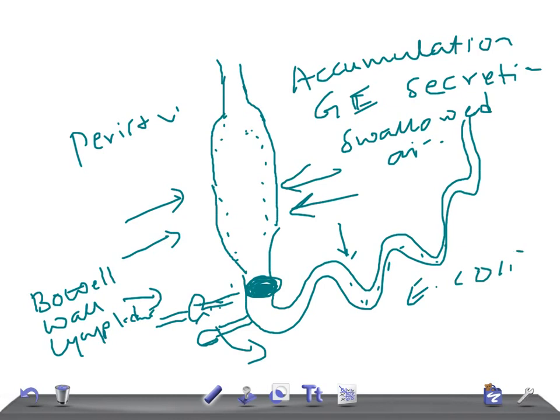Strangulated small bowel obstruction is most commonly associated with adhesions. Hernias can compress the bowel wall, causing lack of arterial blood supply, ischemia, and necrosis, ultimately leading to perforation, peritonitis, and death. Alternatively, the obstructed loop can twist on its own mesenteric pedicle — like volvulus — causing lack of blood supply, necrosis, perforation, peritonitis, and death.